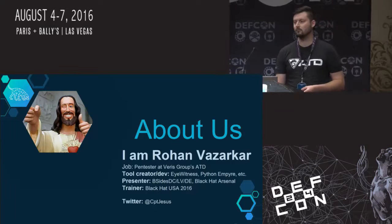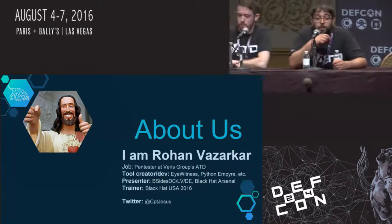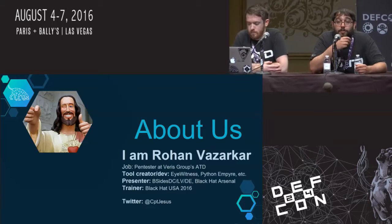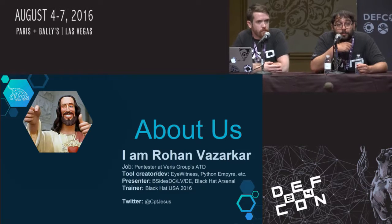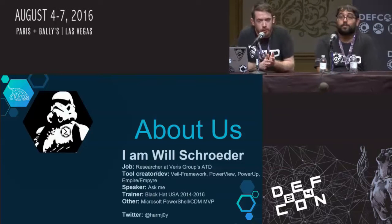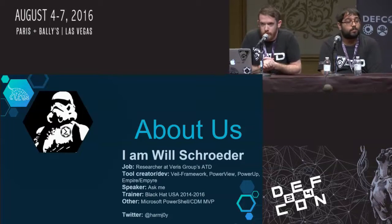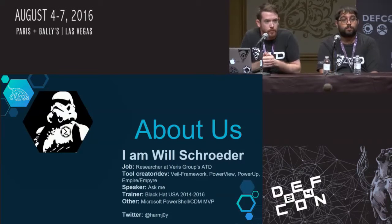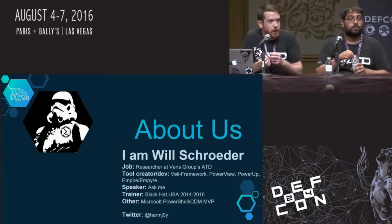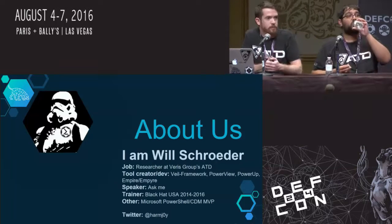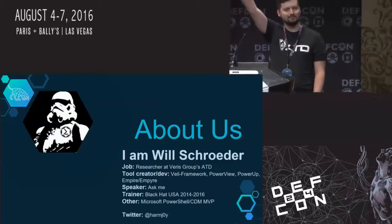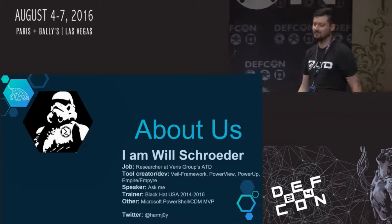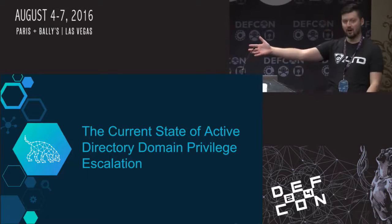I'm Rohan Veserker, another penetration tester at Varus Group. I've been doing penetration testing for about two and a half years. I work on a lot of open source projects and was responsible for the web UI for this one. And I'm Will Schroeder, handle Harmjoy. I'm a researcher at the Adaptive Threat Division and I've built a good number of our offensive tool sets, most notably PowerShell Empire and also PowerView, which acts as the data collection component for Bloodhound.